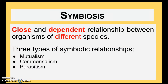Then we have symbiosis. This is a close and dependent relationship between organisms of different species. This can be a bit confusing at first, but once we dive into the different types of symbiotic relationships — like mutualism, commensalism, and parasitism — you're going to understand that this is about organisms that live and rely on each other, even though they're different species.